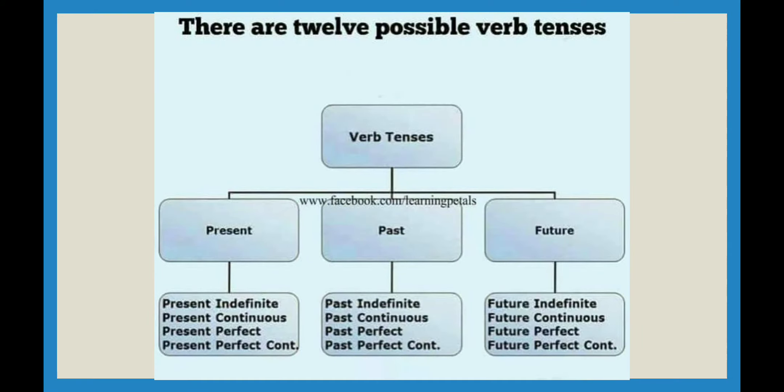There are twelve possible verb tenses. You know that there are three types of tenses — present tense, past tense, and future tense. For every tense, the three main tenses are divided into four parts: simple tense, continuous tense, perfect tense, and perfect continuous tense. Simple tenses make general statements, not definitive.